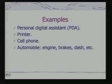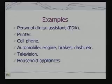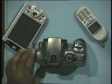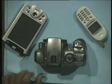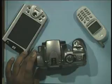Automobiles have got a number of microcontrollers and are actually embedded networked computing systems. Television uses microcontrollers for various purposes, as do household appliances. Here we have got a PDA, this is a digital camera, this is a cell phone, and all of these embedded systems actually have not one but more than one microcontroller sitting inside.